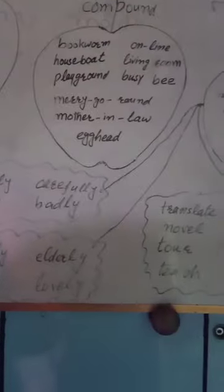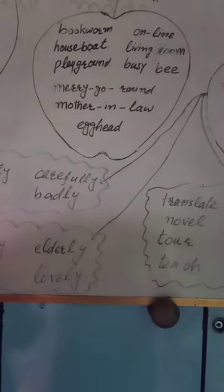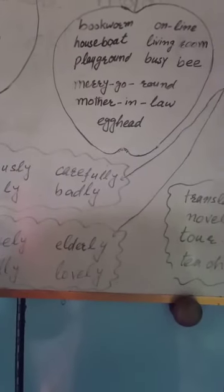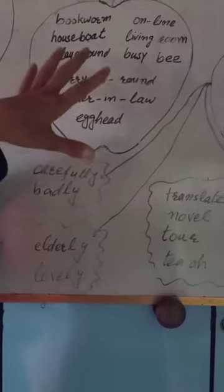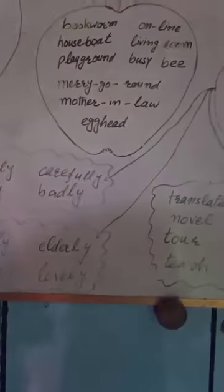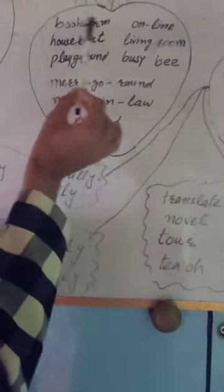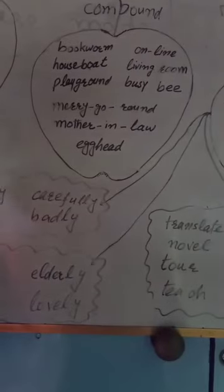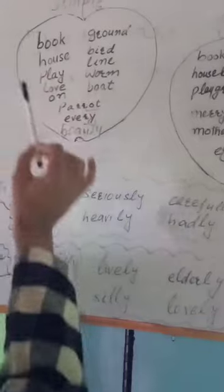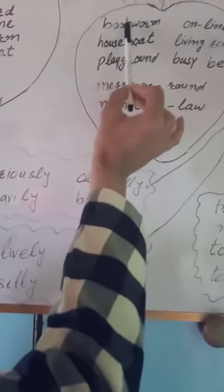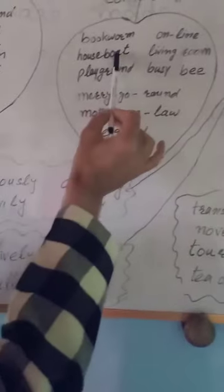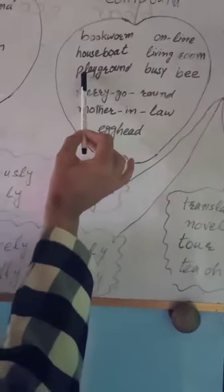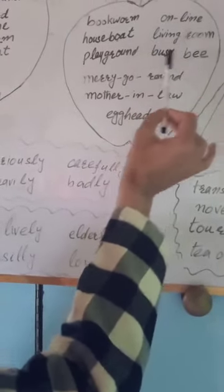Moving on to compound words: bookworm, houseboat, playground, online, living room, busybody. These words are made up of parts which are meaningful in themselves and independent units. For example, 'bookworm' has two parts — book and worm — both simple words. When they combine, they form the new word 'bookworm.' Similarly, play and ground, on and line, living and room all combine to form compound words.